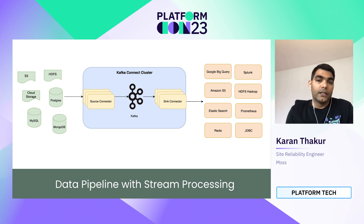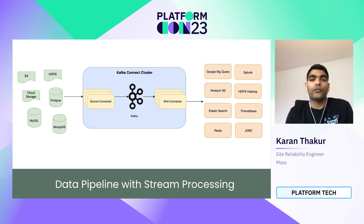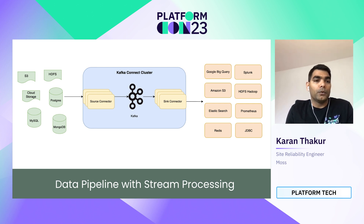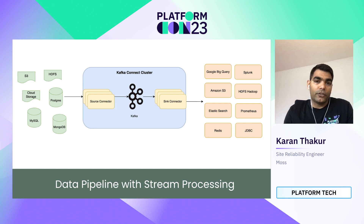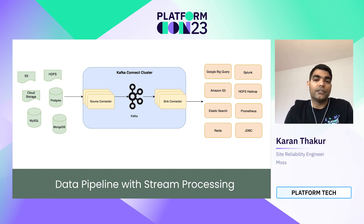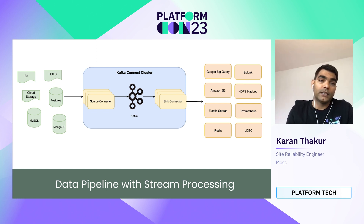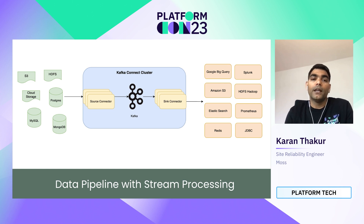There are multiple components involved. First is the data source — it can be any database, storage bucket, or other source from which data needs to be collected. As you can see in the diagram, data sources can be S3 buckets, cloud storage, MySQL, Postgres, MongoDB, or Hadoop. Then the centralized component is the Kafka Connect cluster. Kafka Connect is a component of Kafka for streaming integration between Kafka and other systems like databases, cloud services, search indexes, and key-value stores. The Kafka Connect cluster has two sub-components: the source connector, a Kafka Connect plugin that listens to source events and posts them to Kafka; and the sink connector, another Kafka Connect plugin that consumes messages from Kafka and syncs data to the destination.